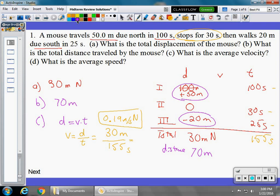Finally, part D is going to be the speed. We can call it S or V for velocity. It's not the displacement over time. It's the distance over time. So we're going to look at the distance, which we said was 70 meters. And the time is going to be the same, 155 seconds.